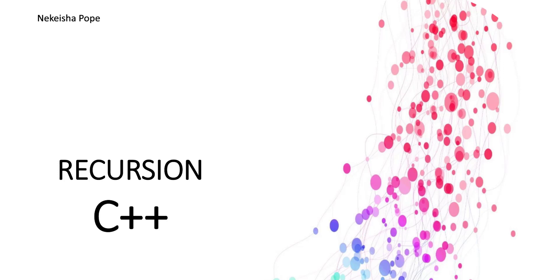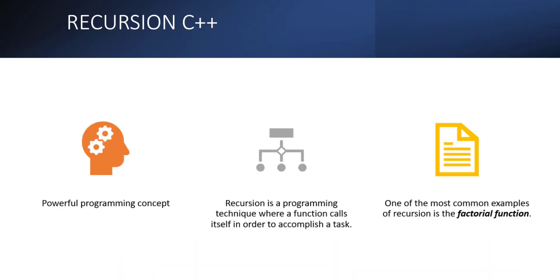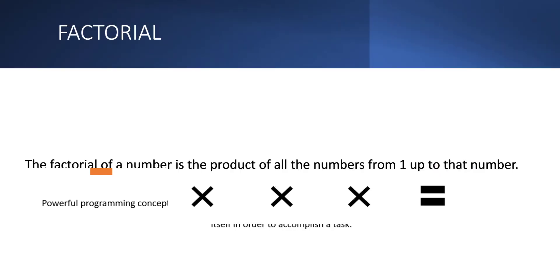Hello everyone and welcome back to my series of tutorials in C++. Today's topic is recursion. Recursion is a very powerful programming concept that can make your code more efficient and elegant. So recursion is a programming technique where a function calls itself in order to accomplish a task. It is a way of solving a problem by breaking it down into smaller, simpler problems. One of the most common examples of recursion is a factorial function.